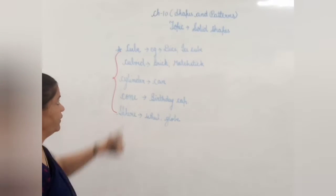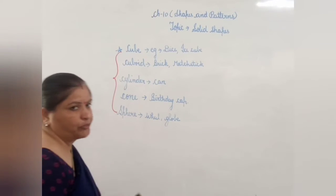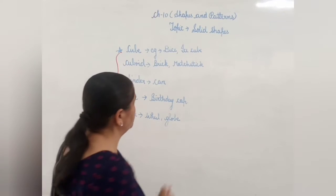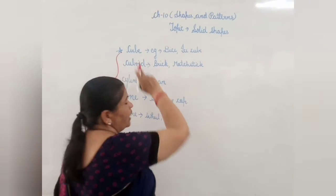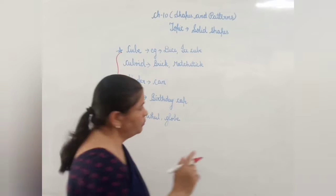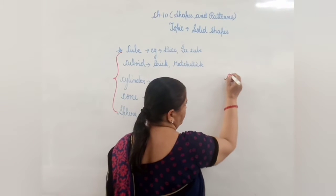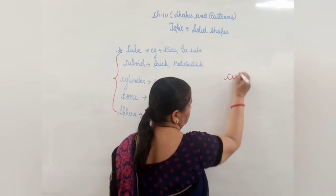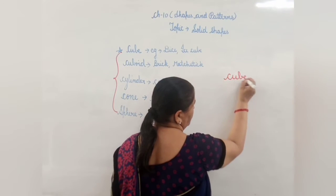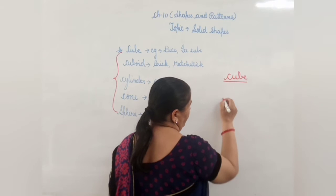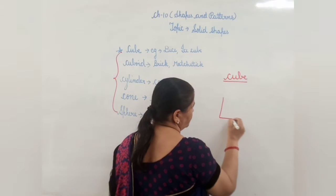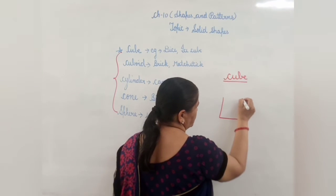Now children, I am going to explain to you how we have to make a cube. While making the cube, first you will go to make a cube. For that, we have to make one square.